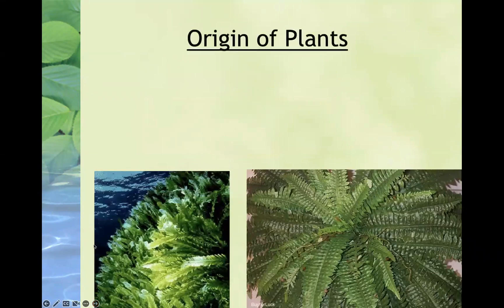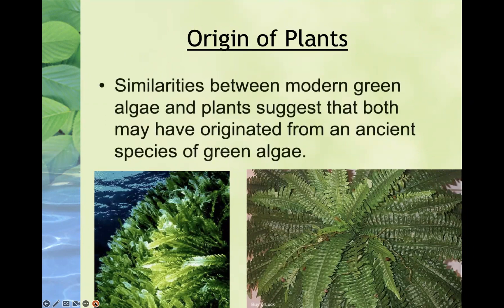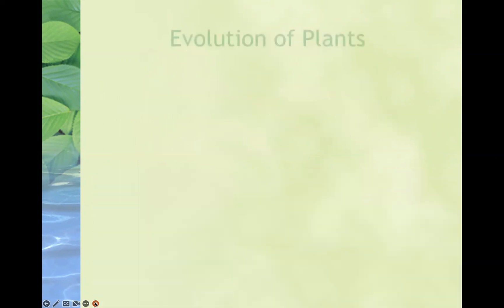The origin of plants is a situation that is not completely known, but similarities between algae and plants suggest that they may have originated from ancient species of green algae. We'll keep that in mind as we explore the evolution of plants.